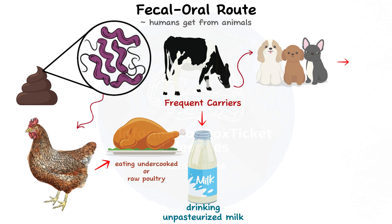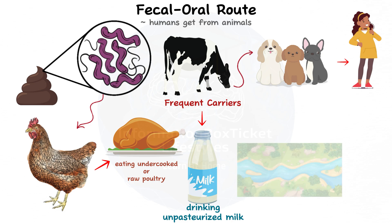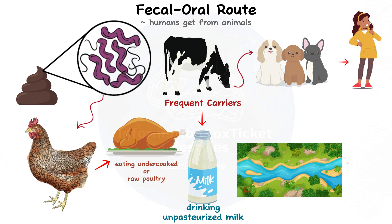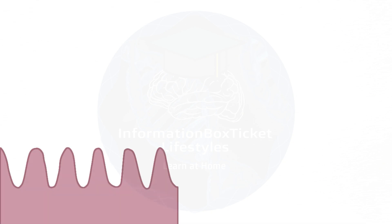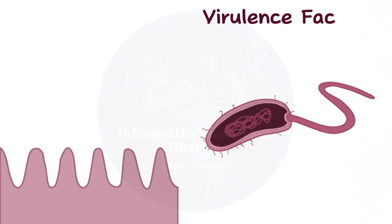Children who play with an infected pet are more at risk of contracting the infection. Additionally, contaminated feces can get into freshwater sources like rivers and spread illness. Campylobacter jejuni may adhere to host cells and cause sickness once it is within our body, thanks to a variety of virulence factors.